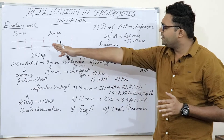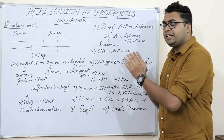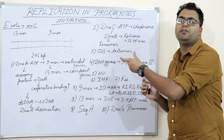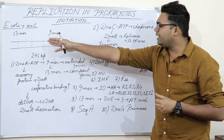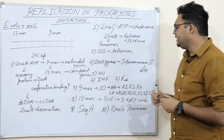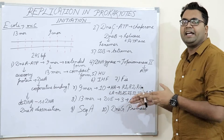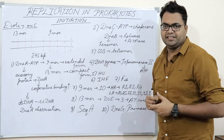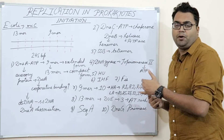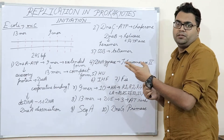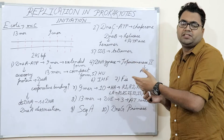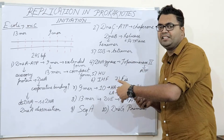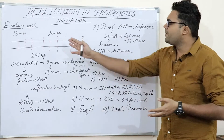The origin of replication is mainly made up of 13mer and 9mer sequences, which are conserved sequences. 13mer means it is a conserved sequence of 13 nucleotides, and there are mainly three 13mer sequences. There are also DNA unwinding elements along with specific AT-rich regions. AT regions are important because AT bonds have two hydrogen bonds whereas GC has three, so AT can be dissociated with much lesser energy.